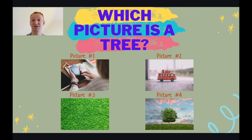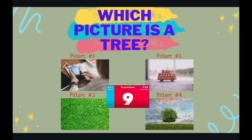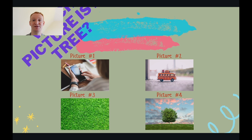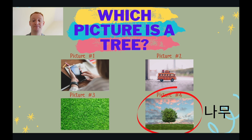Which picture is a tree? You have ten seconds. Okay, let's have a look at the answer. Picture four was a tree. There is one tree. This tree has green leaves.